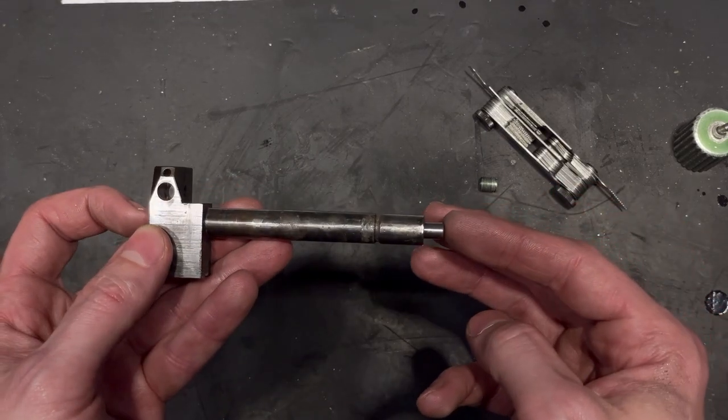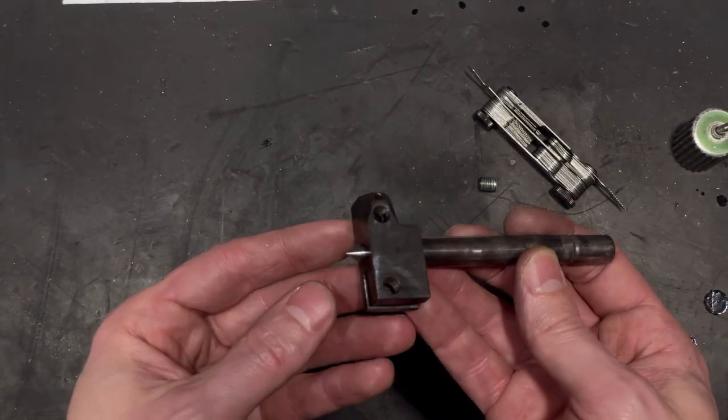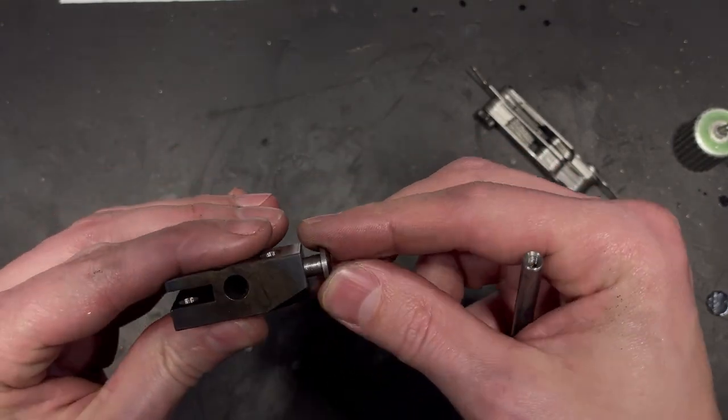The rod still slightly touches the walls of the part. So I will need to get the right size reamer to straighten out the inner walls of the part.